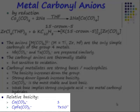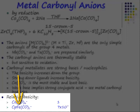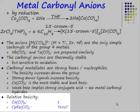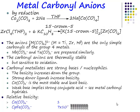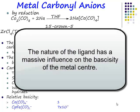In this table, there's a relative basicity scale. If you have a cobalt tetracarbonyl anion, that has a relative basicity of one. If you go from cobalt to iron and replace the CO ligands with a Cp ligand — a Cp ligand is a much better donor and a much poorer acceptor — it massively increases the basicity. How massively? By a factor of 70 million. So we have a 70 million-fold increase in the basicity of the metal centre, essentially just by switching ligands. The nature of the ligand has a massive influence on the basicity of the metal centre.